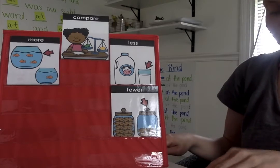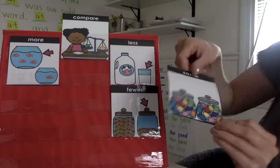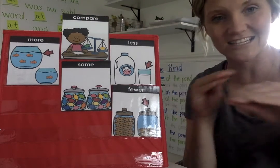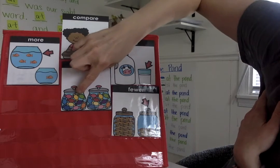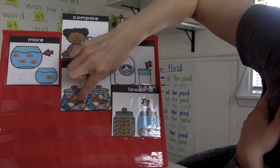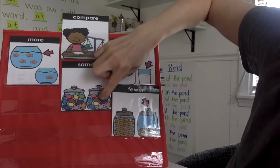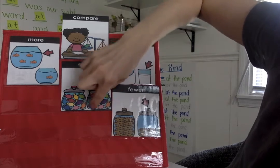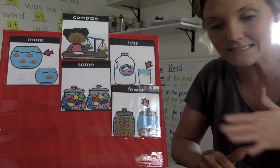Another word we talk about is 'the same amount.' The same amount means that they are both identical — they both have the same number. If we counted: 1, 2, 3, 4, 5, 6, 7, 8, 9, 10 — there are 10 candies in that jar, and 1, 2, 3, 4, 5, 6, 7, 8, 9, 10 — 10 in that jar too. They're the same; they both have 10 candies.